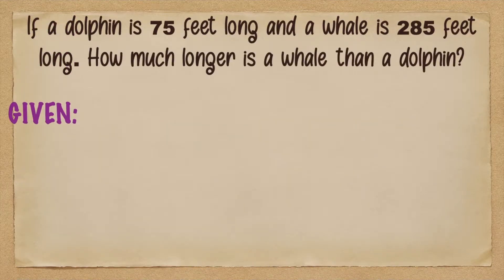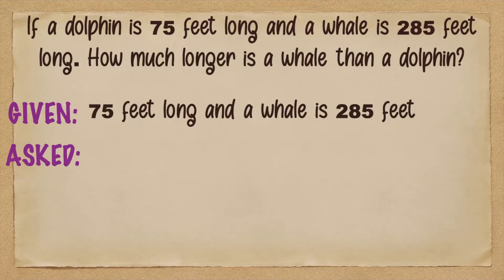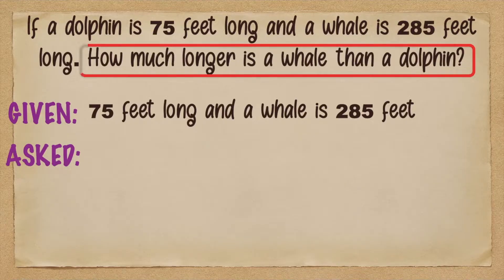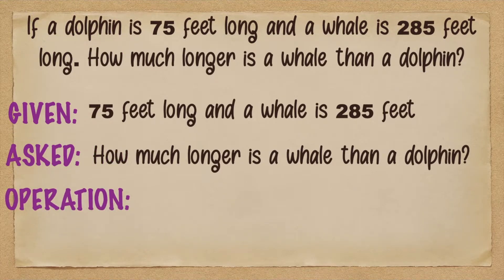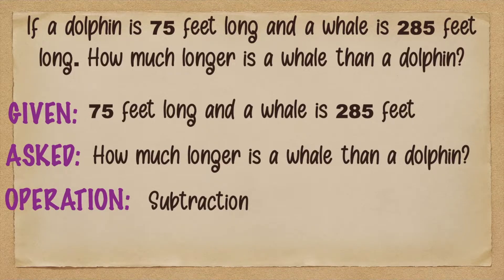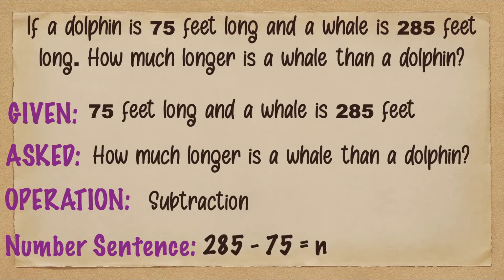What are the given? The given are 75 feet and 285 feet. Next, what is the problem asking? How much longer is a whale than a dolphin? What operation are we going to use? We're going to use subtraction. Let's write the number sentence: big number minus smaller number equals n. So we have 285 minus 75 is equal to n.